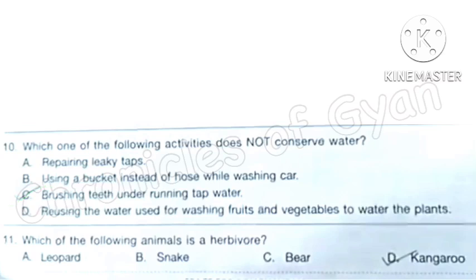Question 11: Which of the following animals is a herbivore? Leopard and snake are carnivore. Bear is an omnivore. And kangaroo is a herbivore. That is, it consumes only plant products. Option D, Kangaroo is the correct answer.